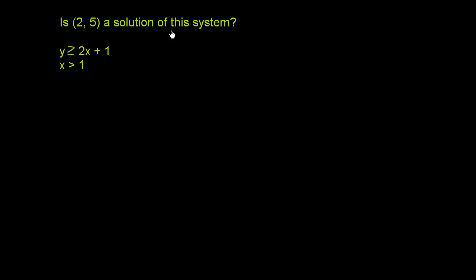Is 2 comma 5 a solution of this system? We have a system of inequalities right over here. We have y is greater than or equal to 2x plus 1, and x is greater than 1.